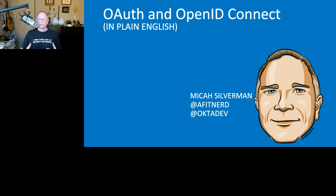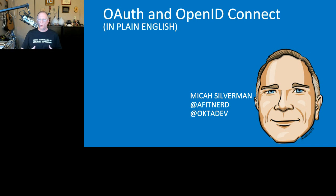When you search for OAuth or OpenID Connect you tend to get one of two types of results: the specifications themselves — which are great if you're building an OAuth service or suffering from insomnia — or deep dives into code without much context for why OAuth, why OpenID Connect, how they differ, and where they come from. So we're going to step back and try to give some context around OAuth and OpenID Connect.